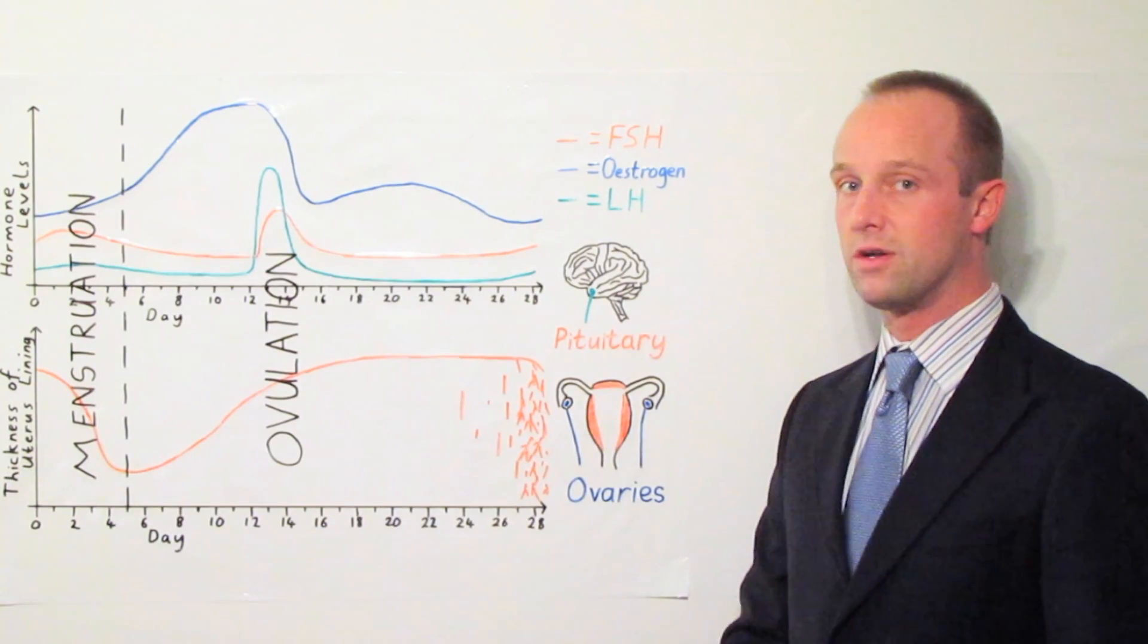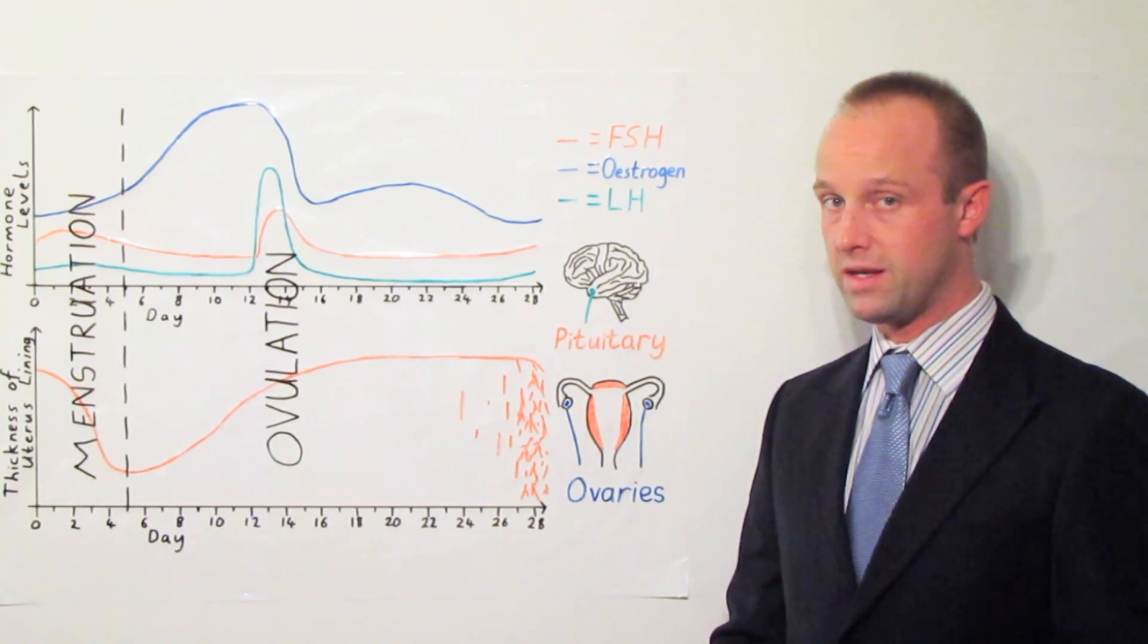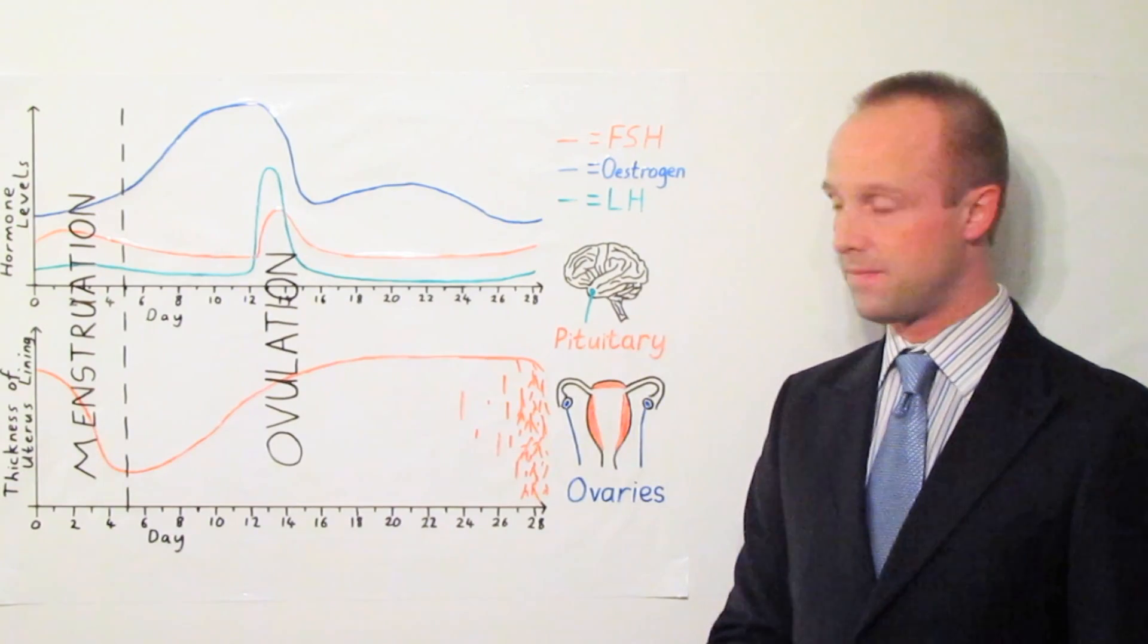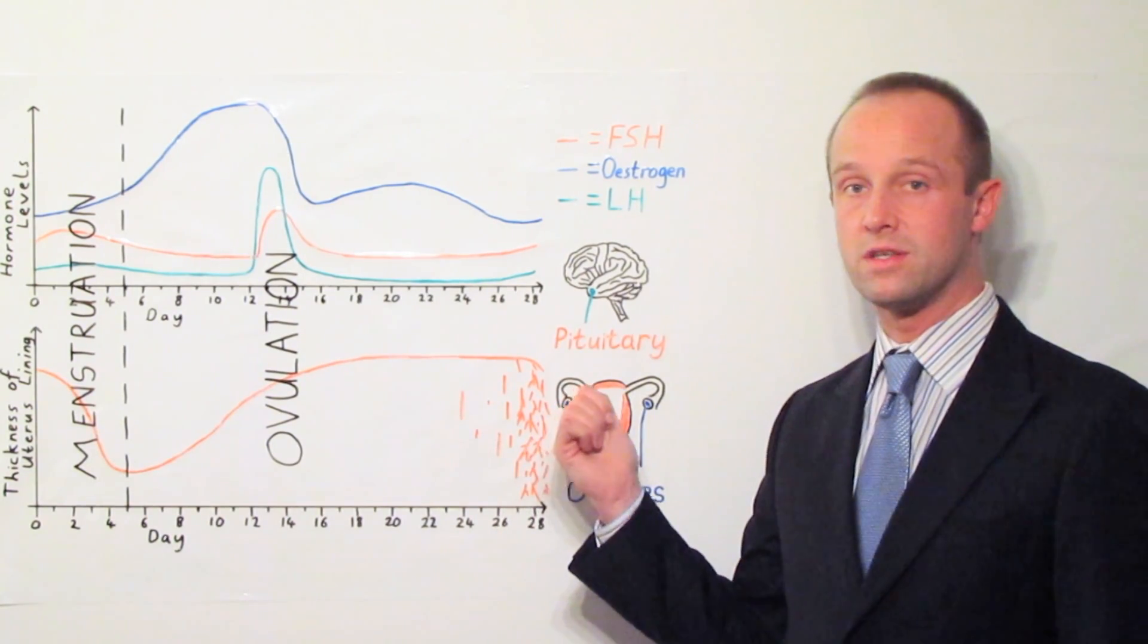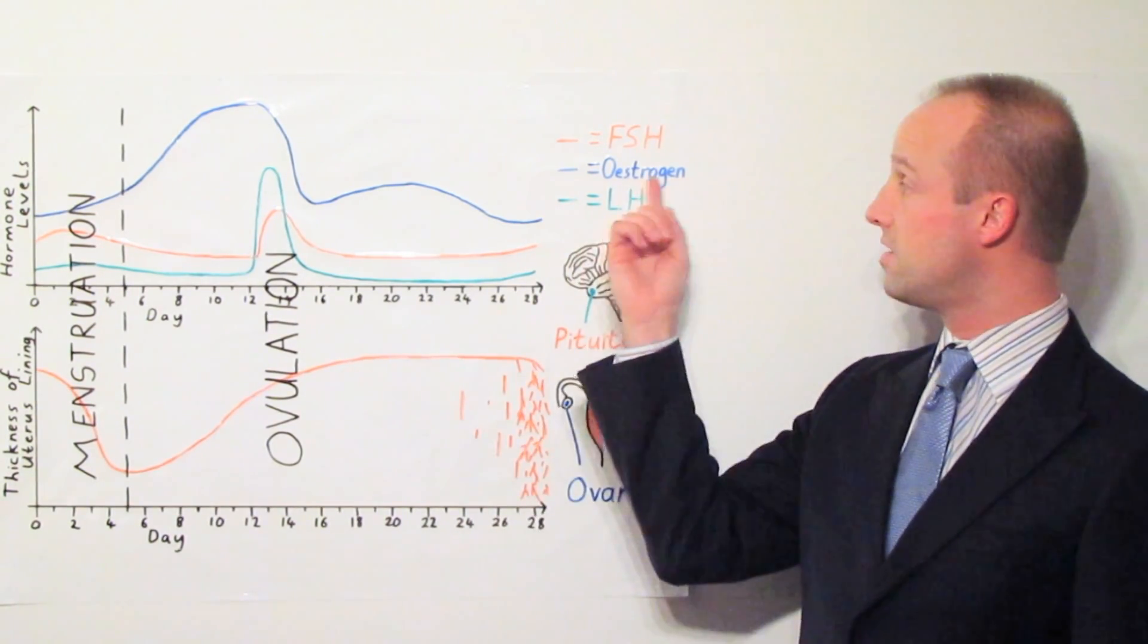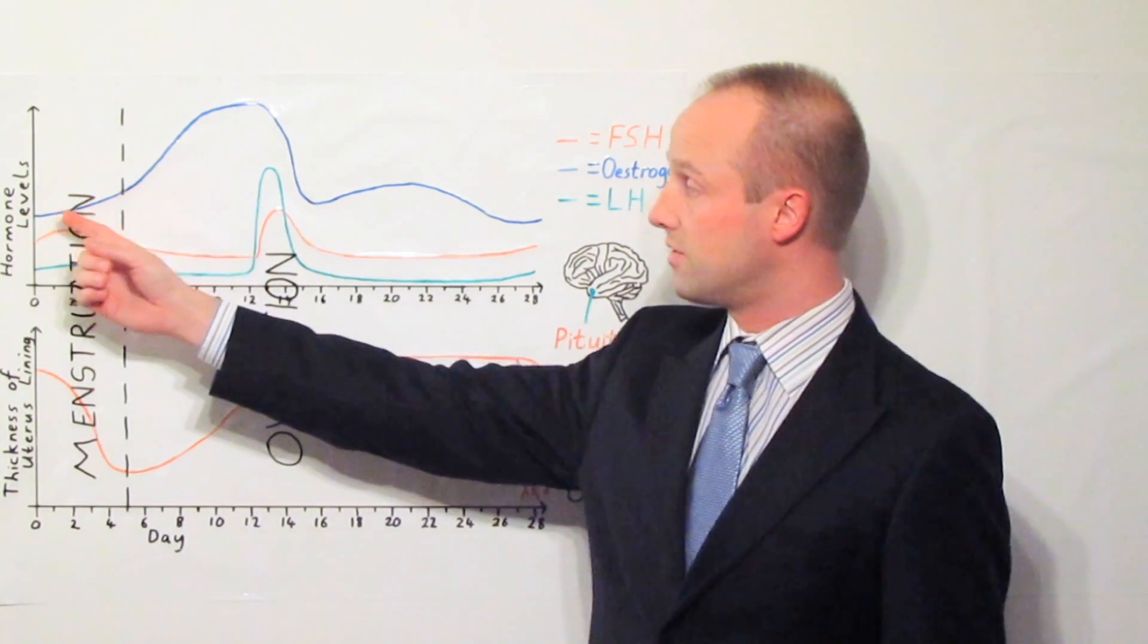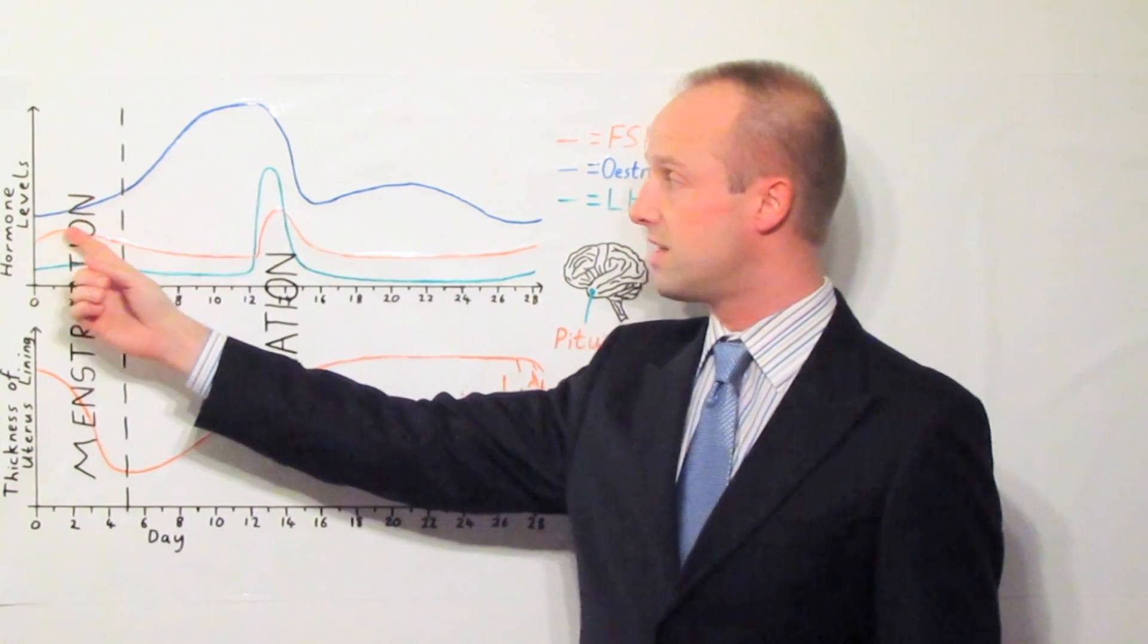This is the egg which is going to be released later on in the month but it needs to start maturing right here at the start of the month. It also stimulates the ovaries to start producing the oestrogen. And so the oestrogen levels start going up because the FSH level went up.